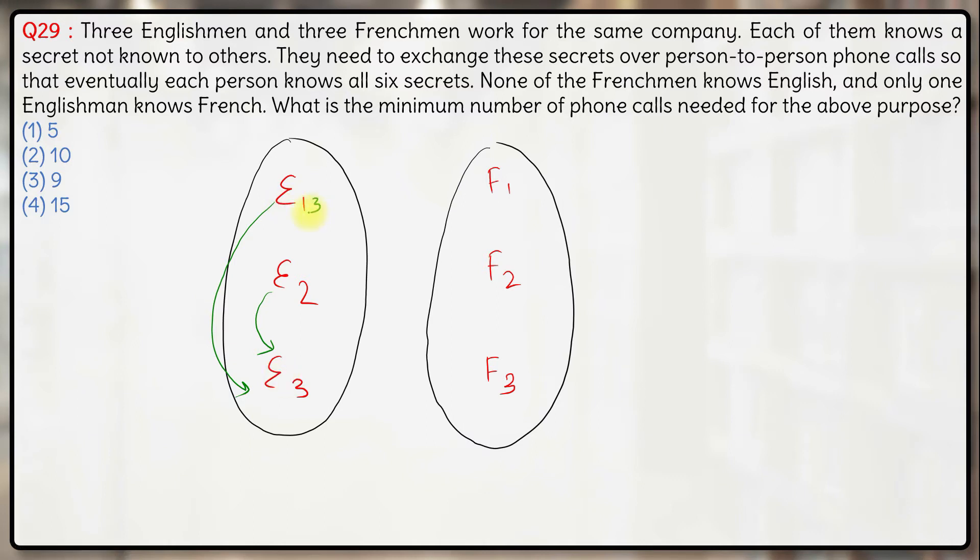And between E2, E3, E2 will know E3 secret and E3 will also know E2 secret. But they do not know each other's secret so far and they do not also know the secret of the French. So let's just keep it for this group here. So there are two calls already made, 1 and 2.